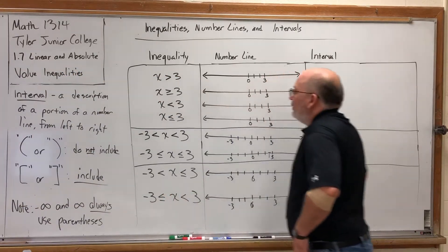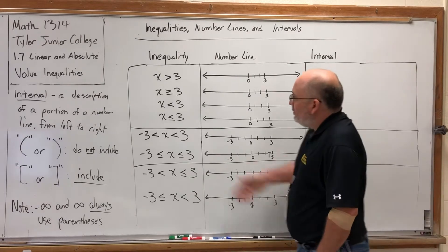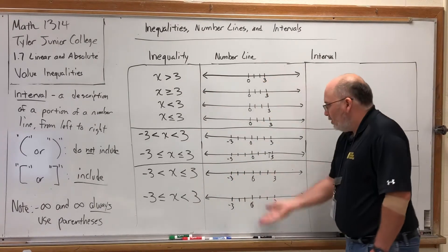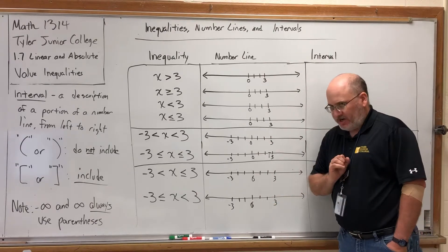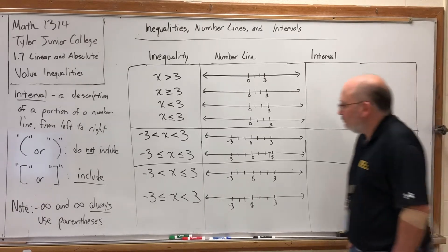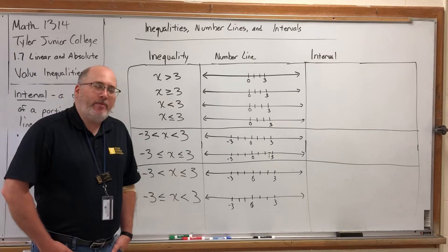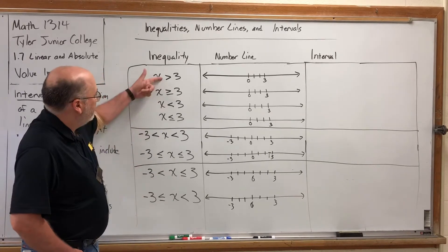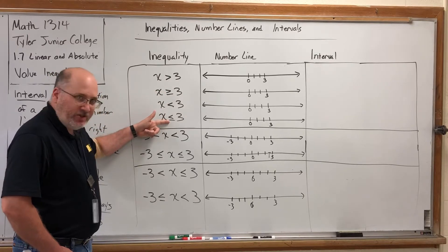You'll notice on the board I've already got a table set up with three columns: one with an inequality in each row, one with a number line that's already set up but not shaded in yet, and then the third column will be our interval.